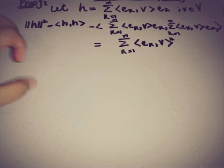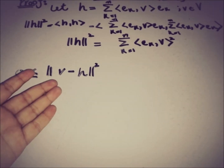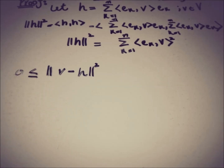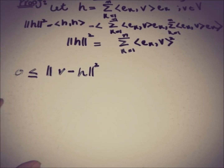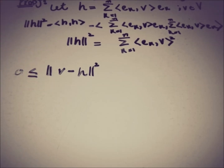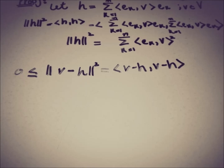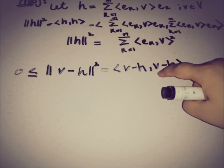For each element v of the inner product space, since the norm is always non-negative, we have ||v − h||² ≥ 0. We use the definition of norm and inner product and write this as the inner product of (v − h) with itself. Expanding gives ⟨v, v⟩ minus the cross terms, yielding ||v||².